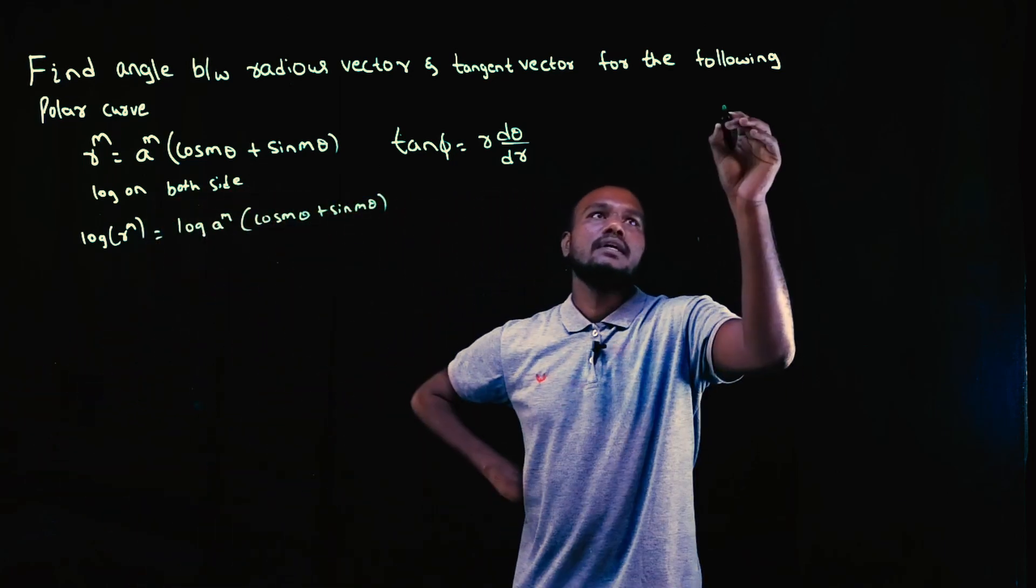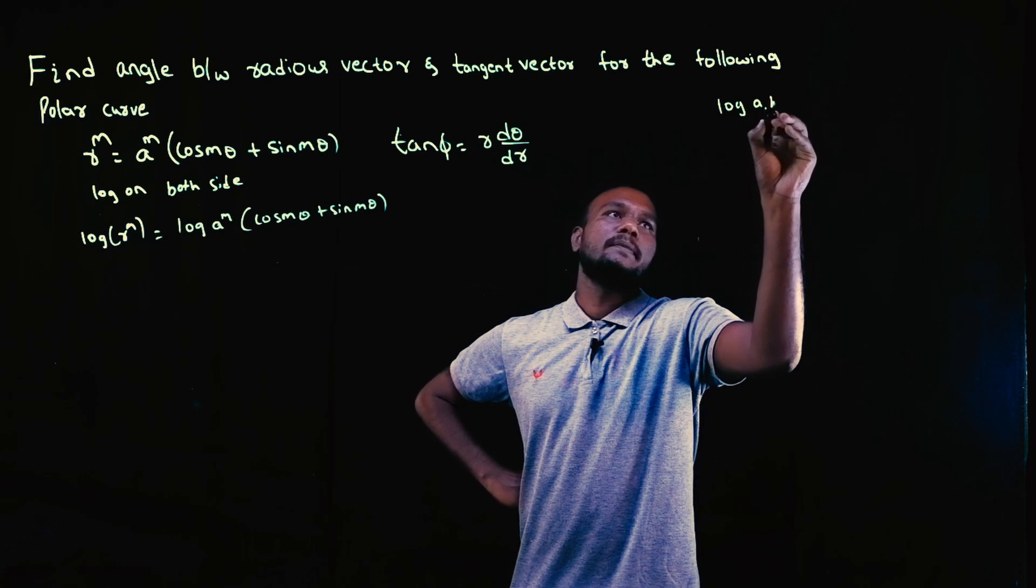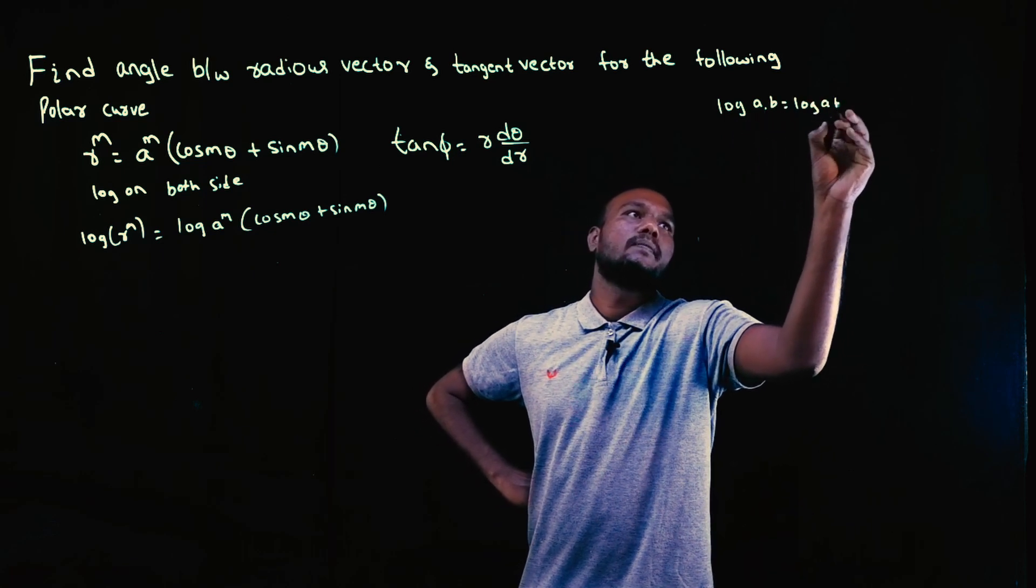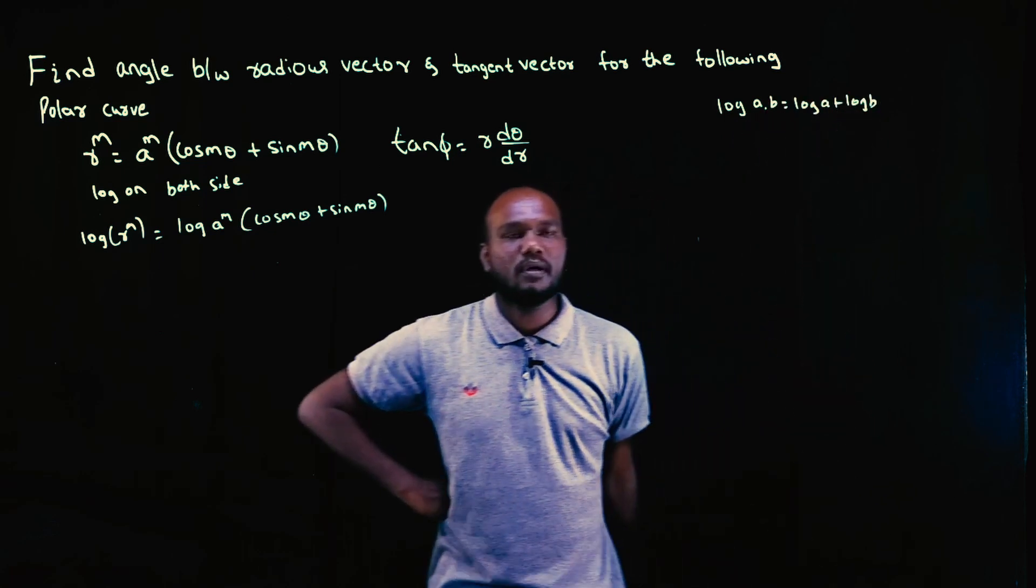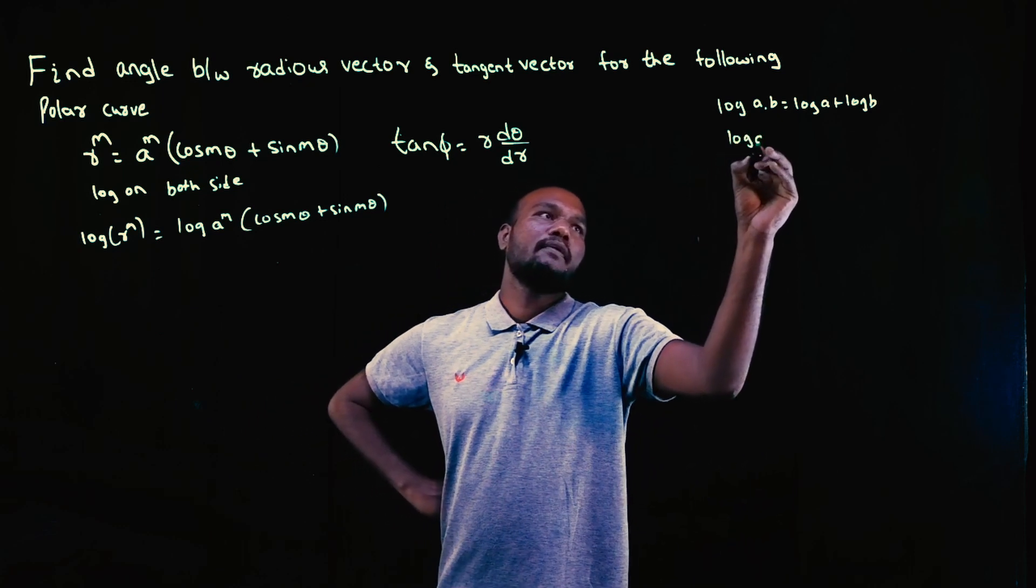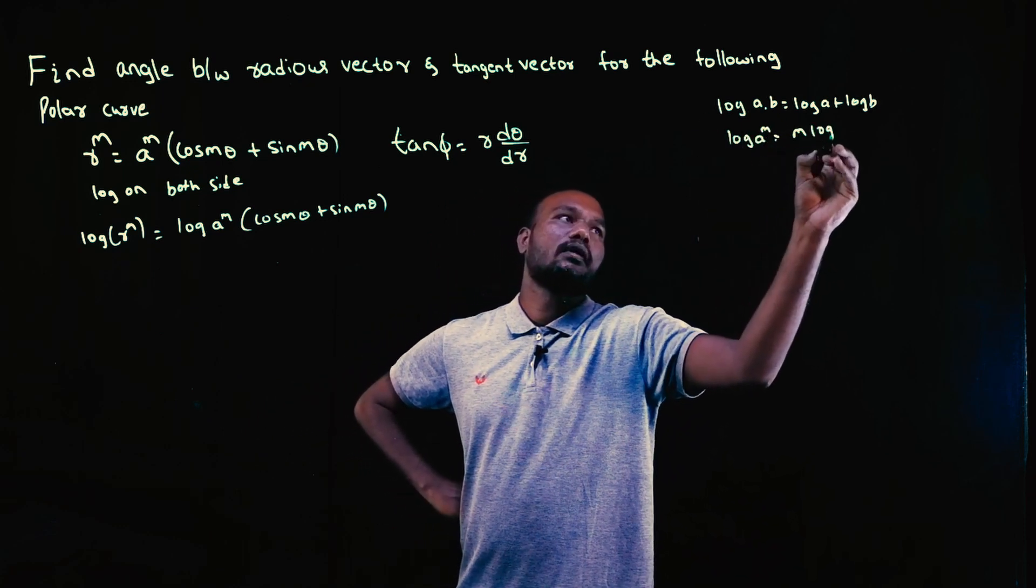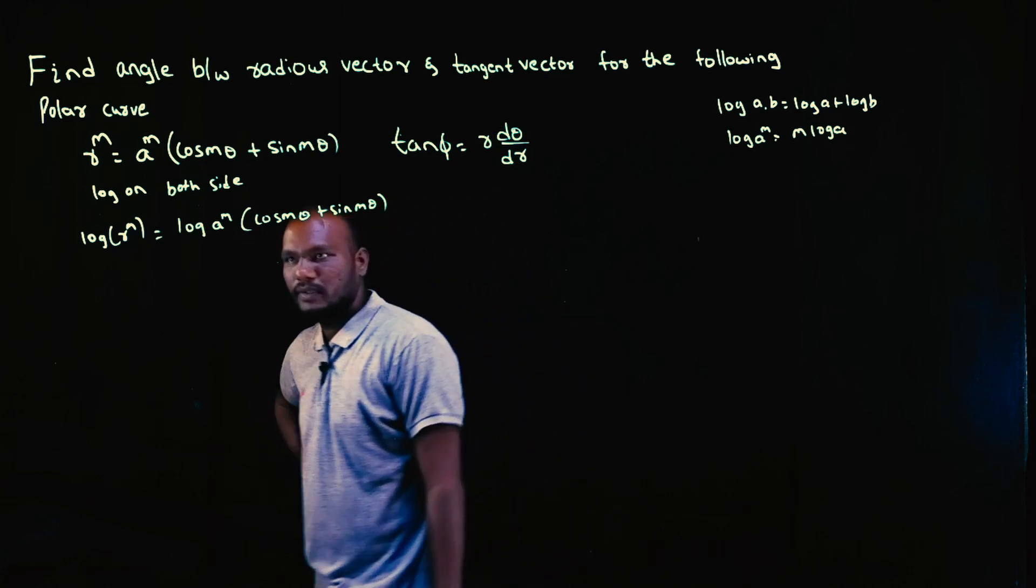Log of a times b equals log a plus log b. This is the formula. And log a^m means m comes in front as m log a. These are the two formulas you need to know.